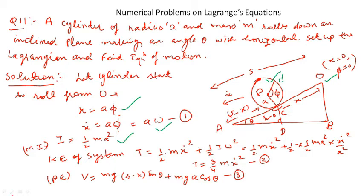Now we find the kinetic energy of the system. There are two motions: translational motion (cylinder rolling along the inclined plane) and rotational motion (rotating about the center of mass), giving rotational energy (1/2)Iω². Substituting the values of I and ω, the total kinetic energy comes out to be T = (3/4)Mẋ².